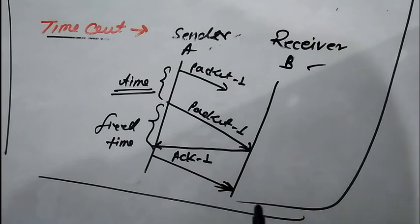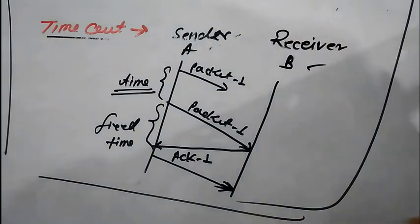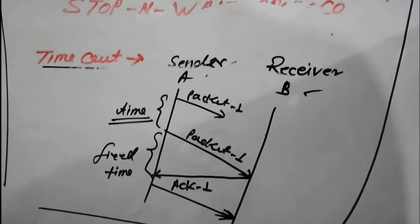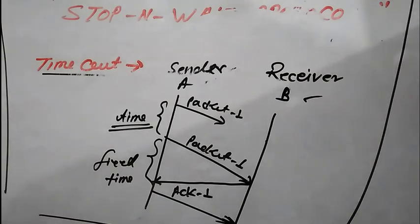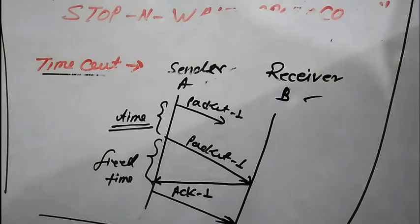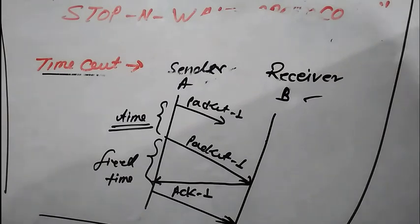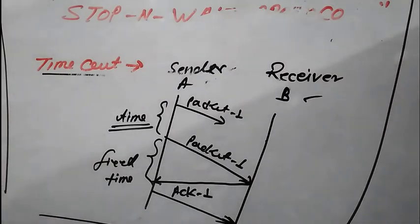In this we have seen the properties of the stop-and-wait protocol. The first property is the timeout. The sender sends the packet and the receiver sends an acknowledgement. After receiving the acknowledgement, the sender is ensured that the delivery of the packet is reliable. This covers Part 1 and Part 2 of the stop-and-wait protocol.